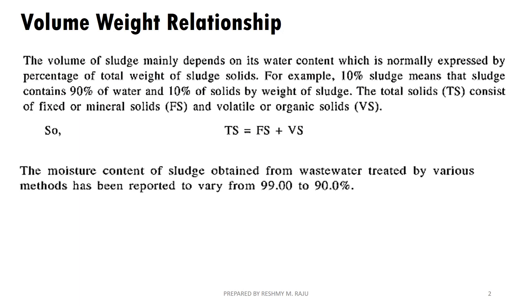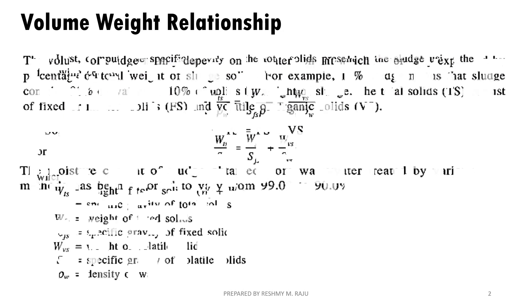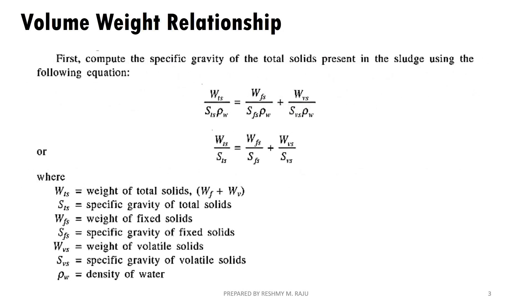So we can write T is equal to Fs plus Vs. The water content will vary from 99 to 90%. We will express the percentage using this relationship with sludge treatment methods.